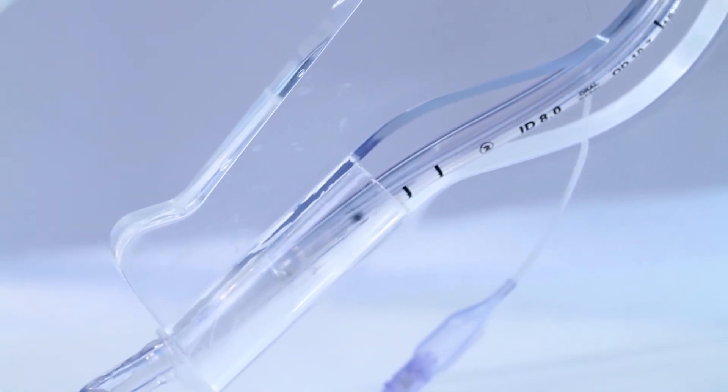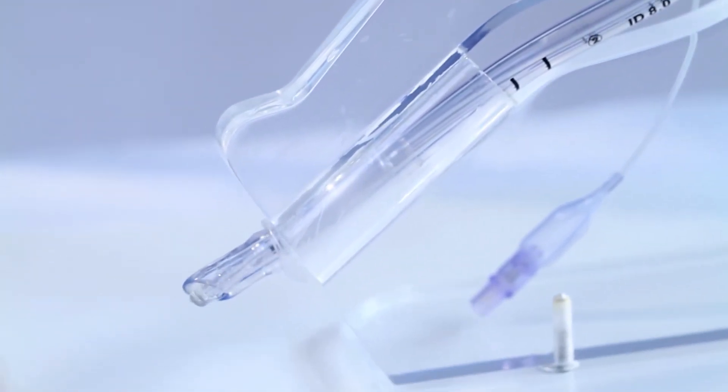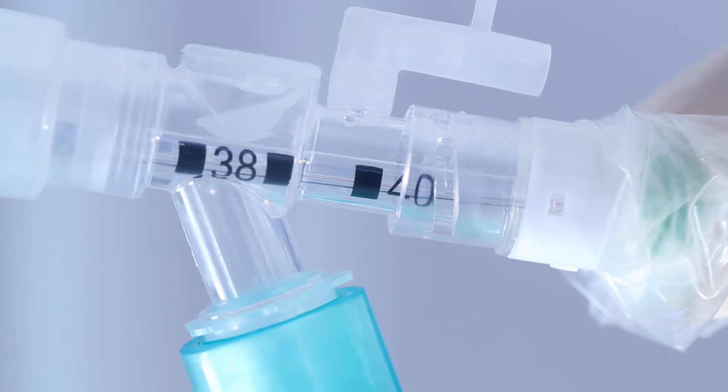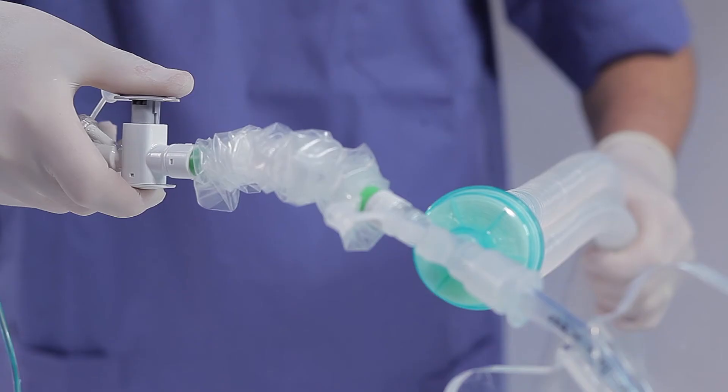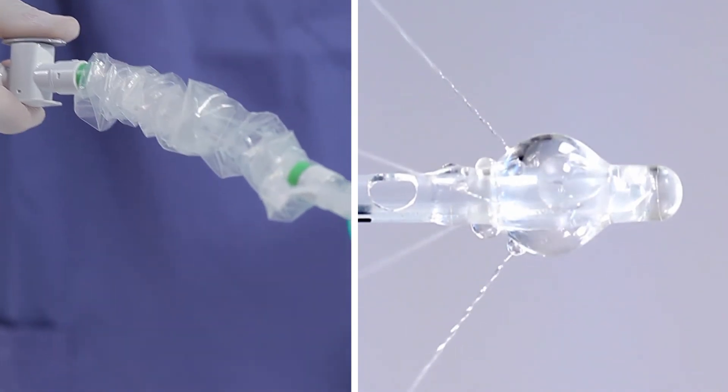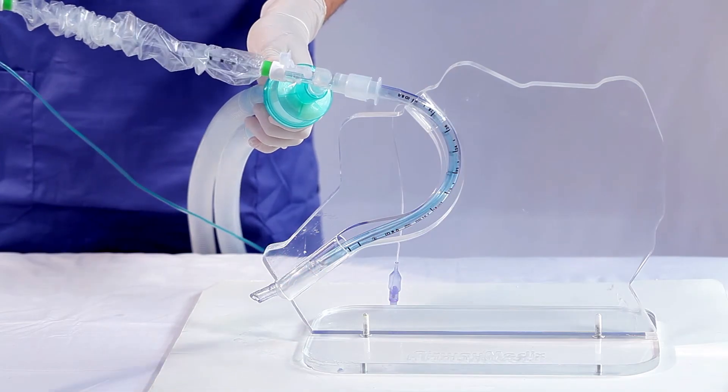Insert the catheter into the endotracheal tube and advance it to the desired depth. Make sure you advance no further than the third bold depth band, which is visible in the clear window. Press the thumb control valve on the handle and simultaneously withdraw the catheter.